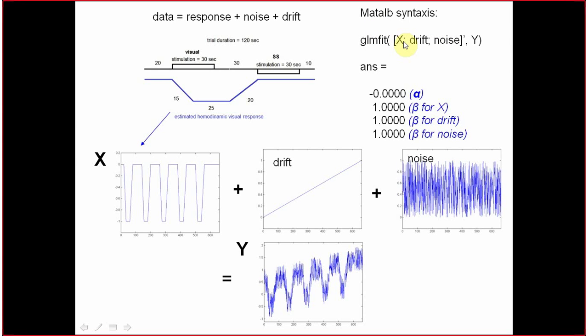You have to introduce all the parameters or functions or predictors you want to test against your data. We want to see what is the contribution of X, what is the contribution of drift, and what is the contribution of noise. And this should normally be the answer.